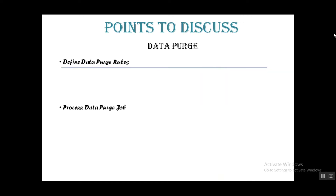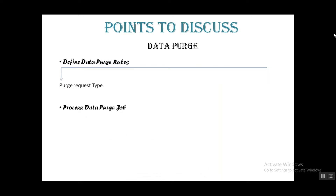As per the first step, the sub-steps for defining data purge rules are: first, we need to define the data purge request type — there are different request types available in the system, and we choose based on our purpose. The second sub-step is to define the purge user criteria — we choose a specific criteria for specific data purge activities.